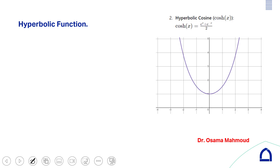For the hyperbolic cosine, putting x = 0: cosh(0) = (e^0 + e^0) / 2 = (1 + 1) / 2 = 1. So cosh(0) = 1, meaning cosh(x) intersects the y-axis at y = 1, and the intersection point is (0, 1).